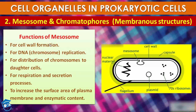The functions of mesosome are: first, cell wall formation; second, chromosome replication; third, distribution of chromosomes to daughter cells; and fourth, they help in respiration and secretion processes. The main crucial function of mesosome is to increase the surface area of the plasma membrane and its enzymatic content.